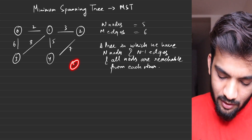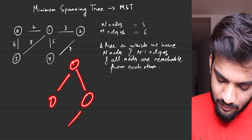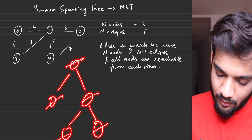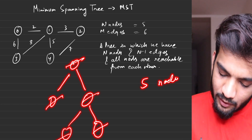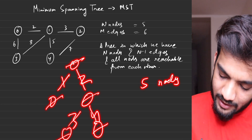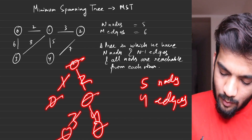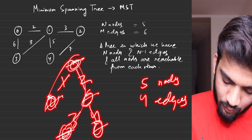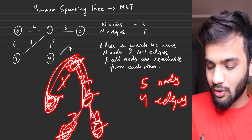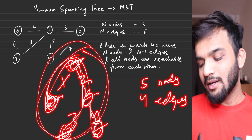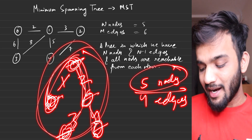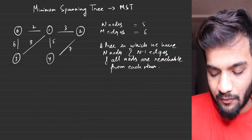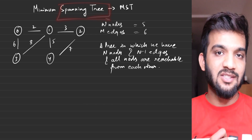Think of a regular tree — say one with five nodes. If you count carefully, it has four edges, and everyone is connected to each other. So it has exactly n nodes and n minus one edges — that is exactly what a spanning tree is.